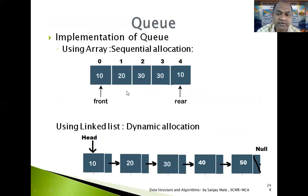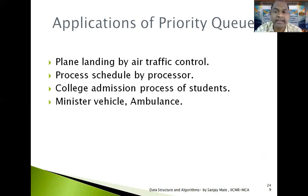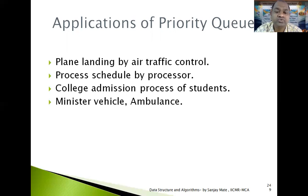Applications of priority queue: plane landing by air traffic control is a very common example. If a particular plane is having less fuel, the priority is given to that plane for landing, even though other planes arrived first. On the roads also, priority is given to minister vehicles and ambulances because they are having more priority. College admission processes also — priority is given to students who are paying the fees.